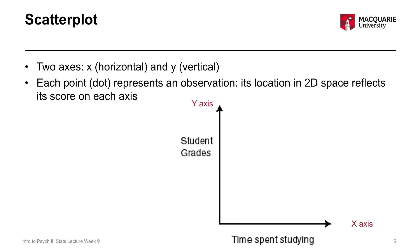For example, time spent studying is on the x-axis. If you spent no time studying, your point would be on the left-hand side; if you spent a lot of time studying, your point is on the right-hand side. If you have a distinction between an independent variable and a dependent variable, the independent variable typically goes on the horizontal x-axis and the dependent variable typically goes on the y-axis. That's just convention — it doesn't change the analysis itself, just the display.